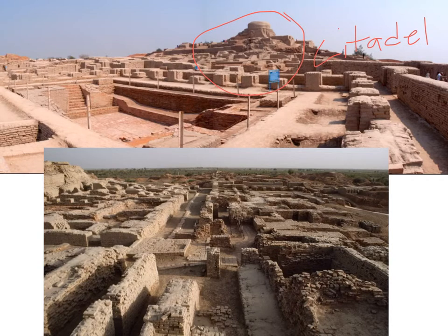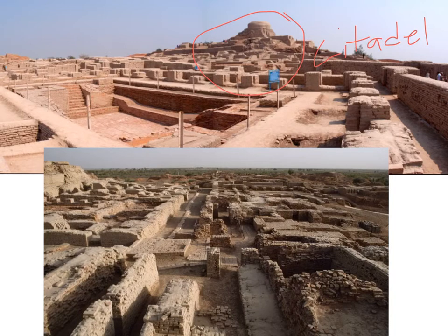Living in Mohenjo-daro: The city buzzed with activity. Merchants and artisans sold their wares from shops that lined the streets. Wagons loaded with grain rolled through the city. Traders came from as far away as Mesopotamia to buy and sell precious goods. Citizens lived in homes that opened onto courtyards. Children played with toys and pets, adults enjoyed games and music, and artisans fashioned jewelry and bright cotton clothing for the people to wear.